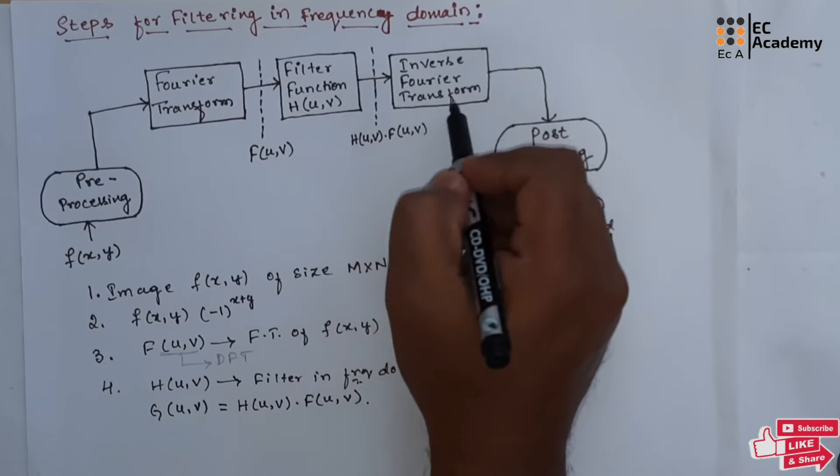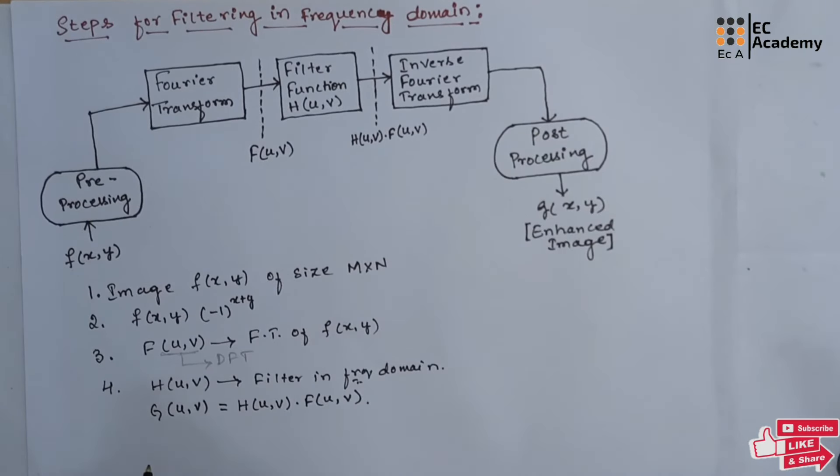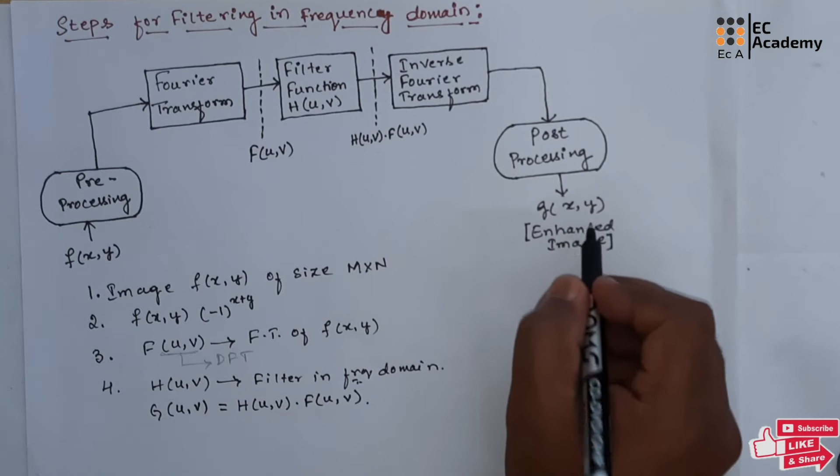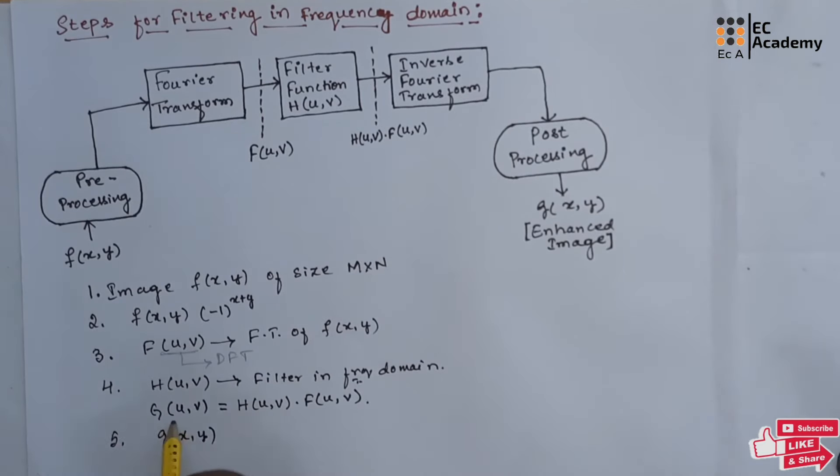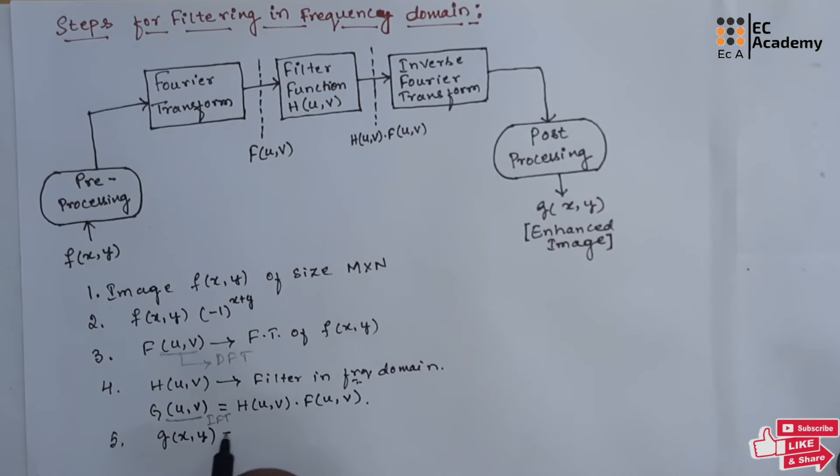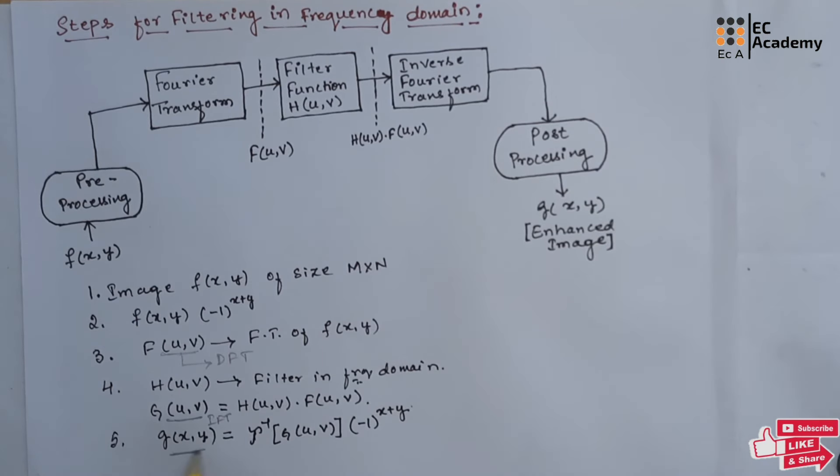Then inverse Fourier transform is applied on g of u, v to get g of x, y. In the next step, we will get g of x, y by applying inverse Fourier transform. This image can be written as inverse of g of u, v. Again, it is multiplied with minus 1 to the power of x plus y. This is the final filtered image or the enhanced version of the image f of x, y.